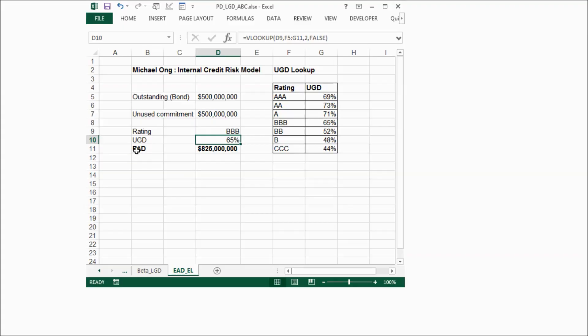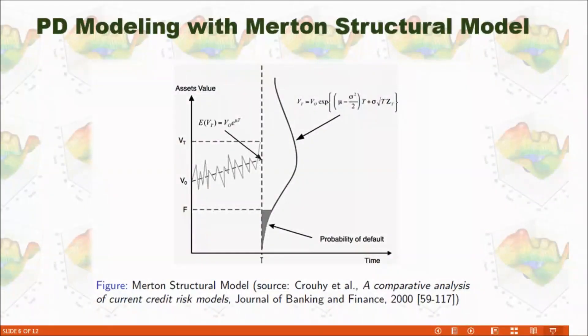Because ABC company's rating is BBB, we can use Vlookup function to pick up UGD from this lookup table. And then our EAD is equal to outstanding plus the percentage of this unused commitment. In this example, we got $825 million as our EAD.